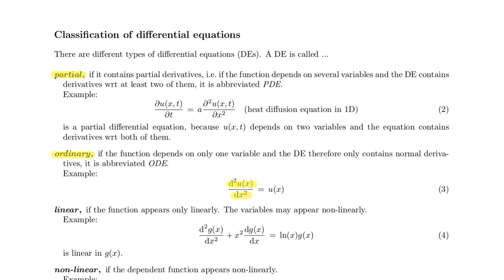While if the function depends on more than one variable and you have derivatives with respect to these different variables in it, then it is called a partial differential equation because the derivatives are partial. Ordinary differential equations are usually easier to solve and in the following we will focus on these.